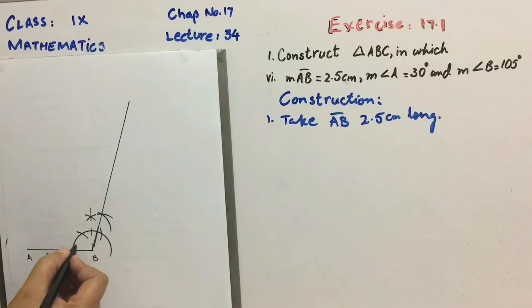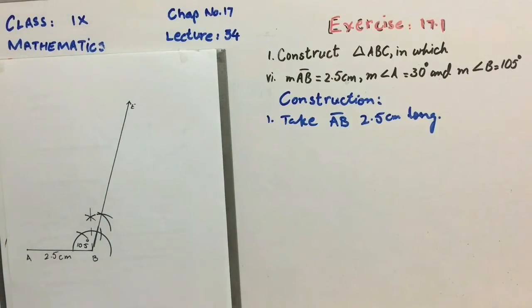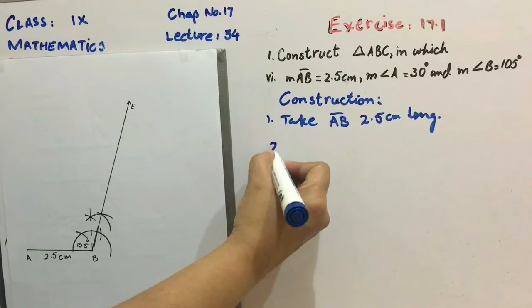Angle of 105 degree is formed. I will name the terminal arm as BE. It's a ray.